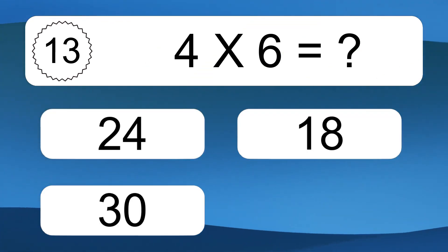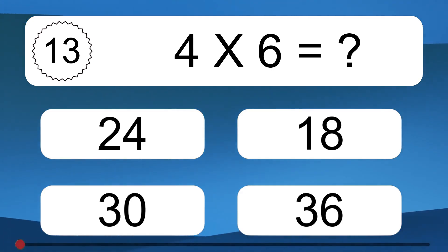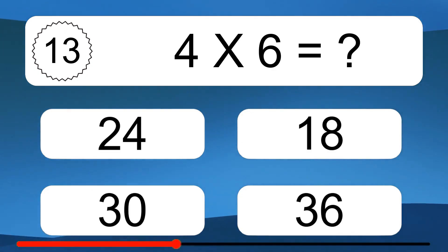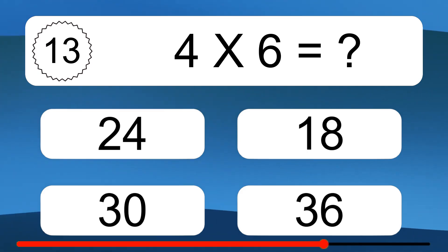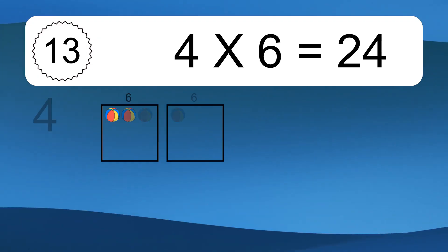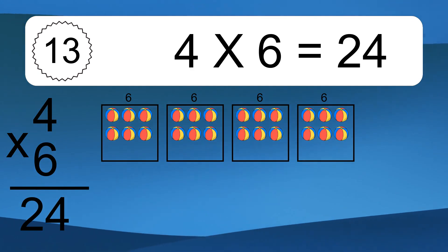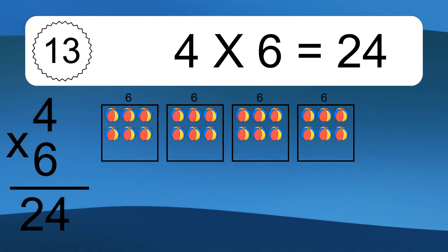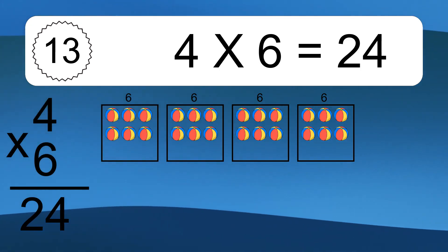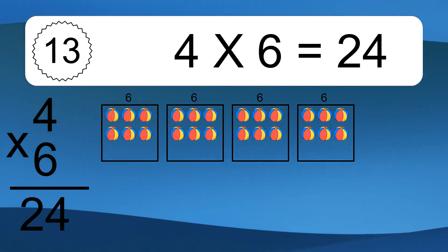4 times 6 equals 24. We have 4 boxes, and each box has 6 colorful balls inside. If you count all the balls in all the boxes together, you will have 4 times 6 balls. This equals 24 balls.